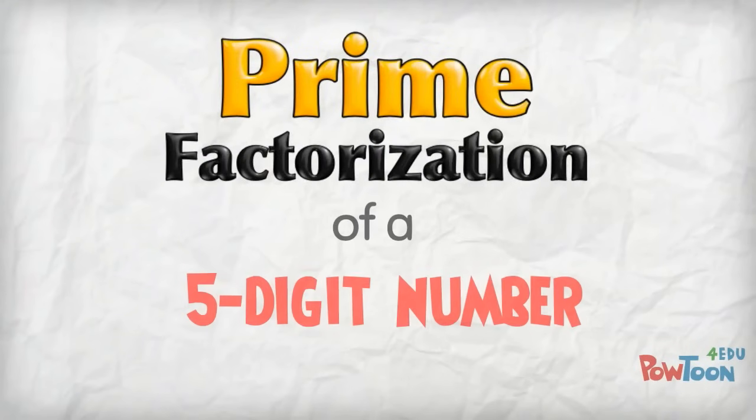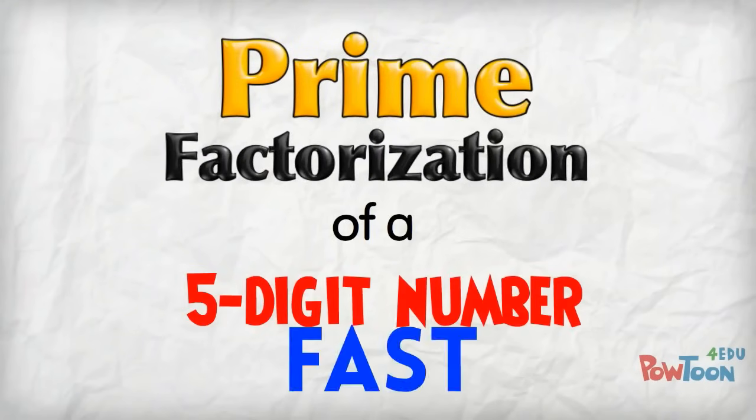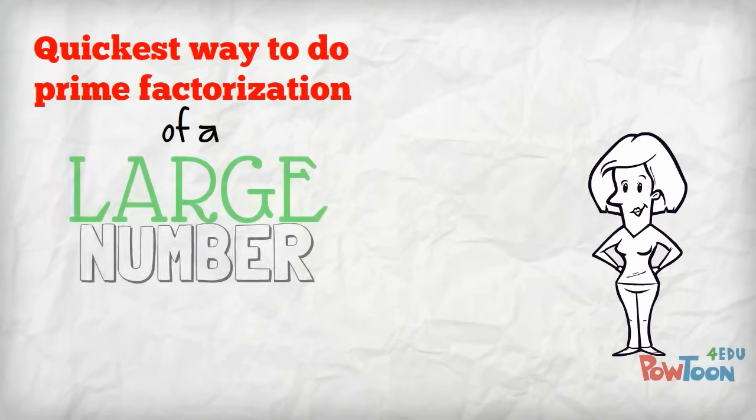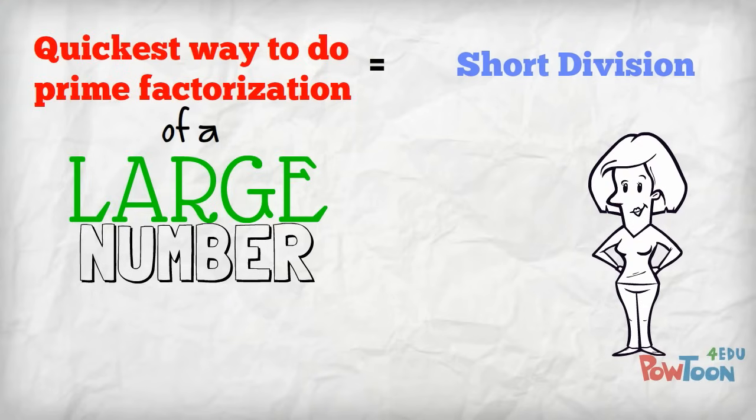Prime factorization of a 5-digit number fast! The quickest way to do the prime factorization of a large number is to use short division.